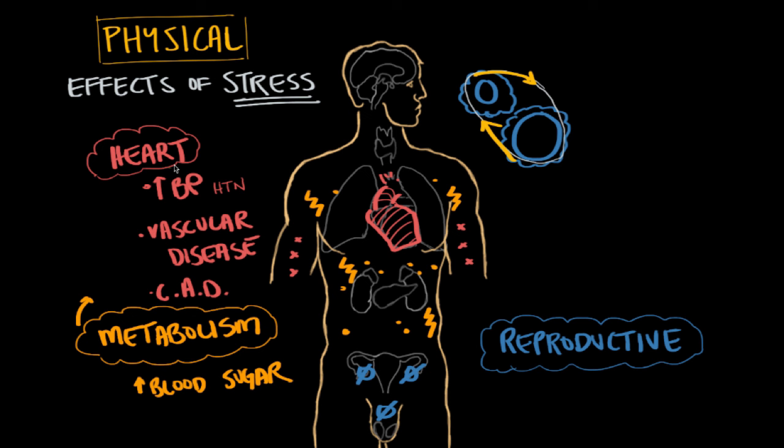And so stress rears its ugly head in the heart, and it rears its ugly head in our metabolism, and it even damages and disrupts our reproductive capacity. But if that weren't enough, the negative effects of stress continue into our immune function.